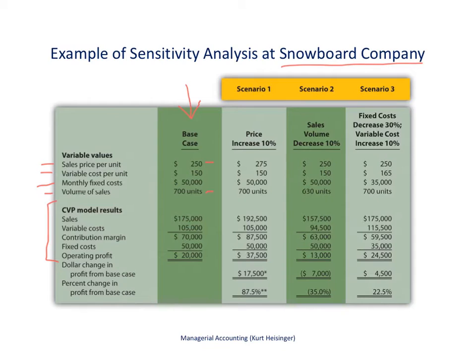If you take 700 times $250, we would get $175,000 in expected total revenue. We also have an expected variable cost per unit of $150.